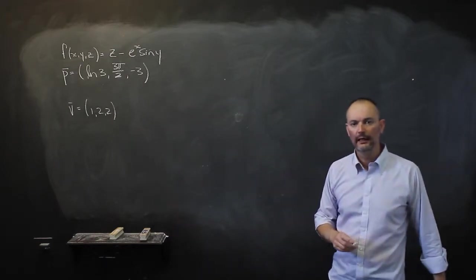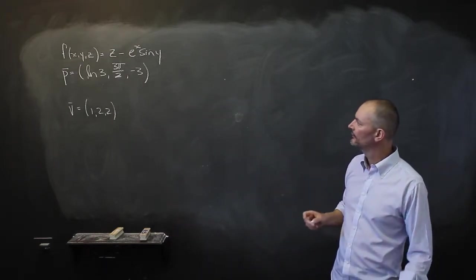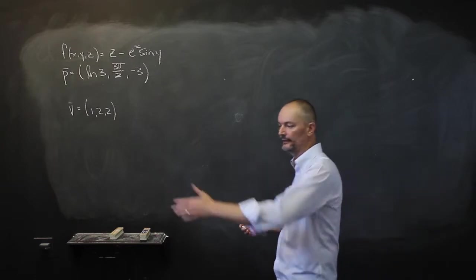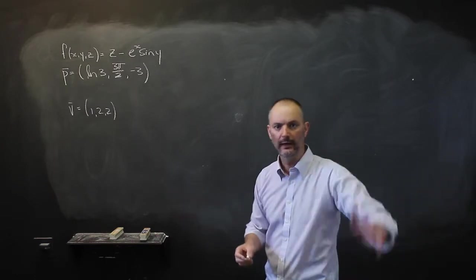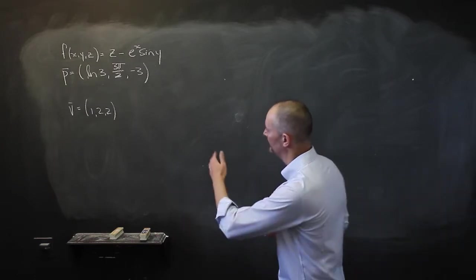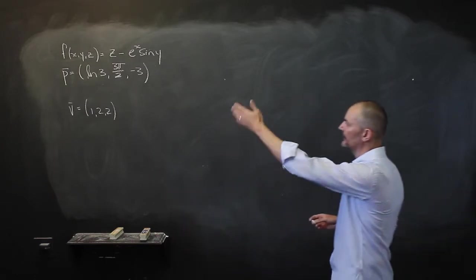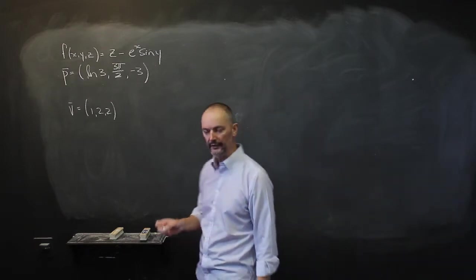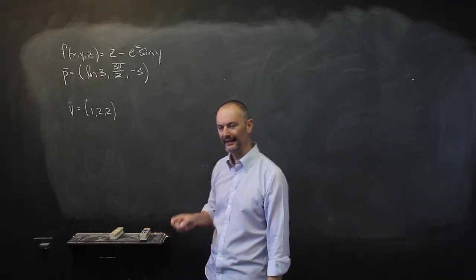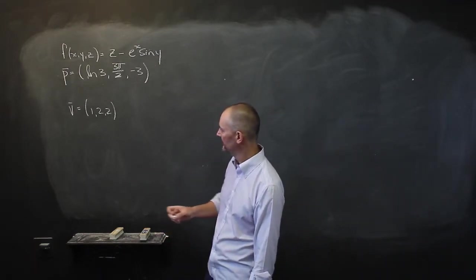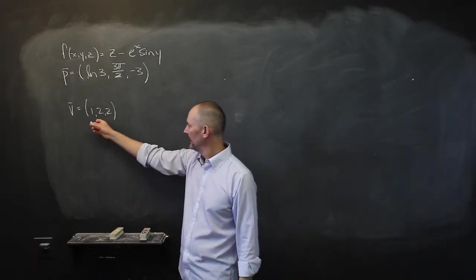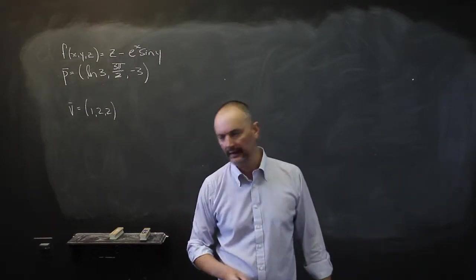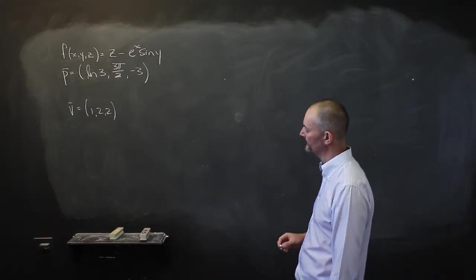If I just asked for the gradient, that would be in the positive x direction, positive y direction, positive z direction — that would be easy. But now I want the directional derivative in this direction, written as a vector (1, 2, 2).